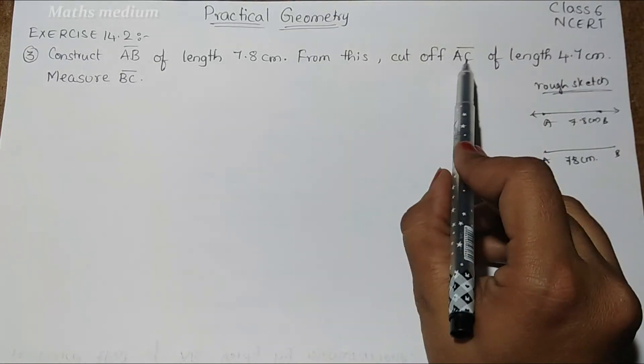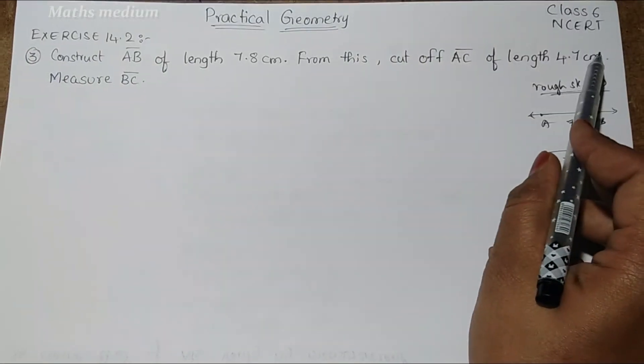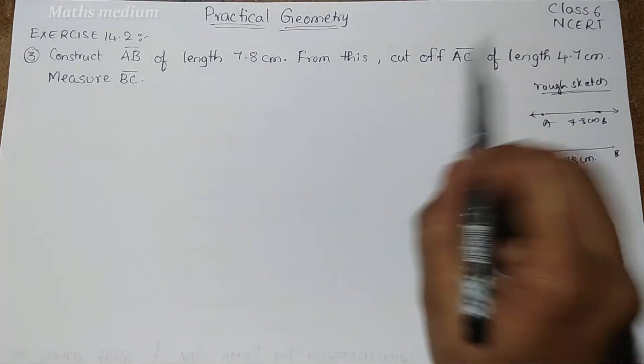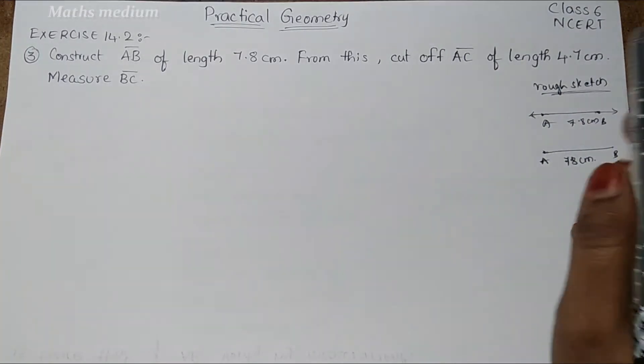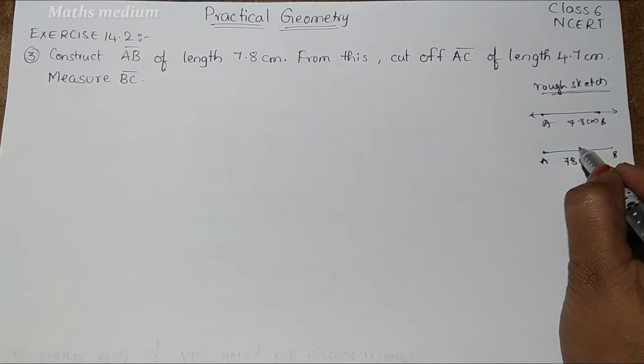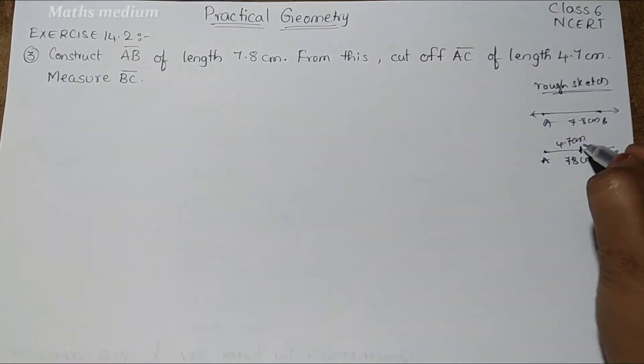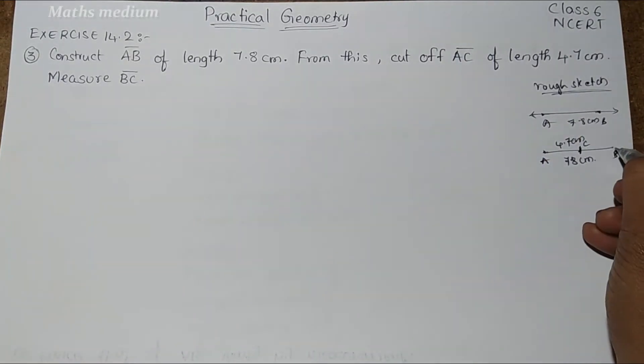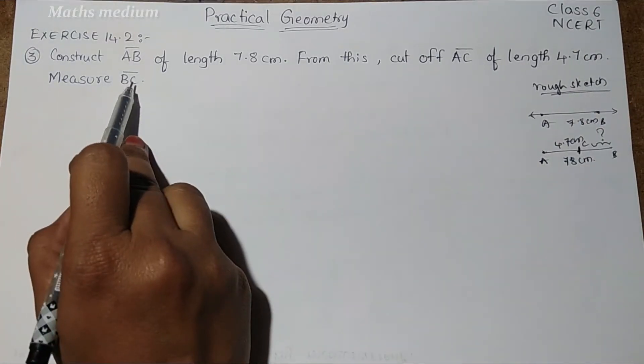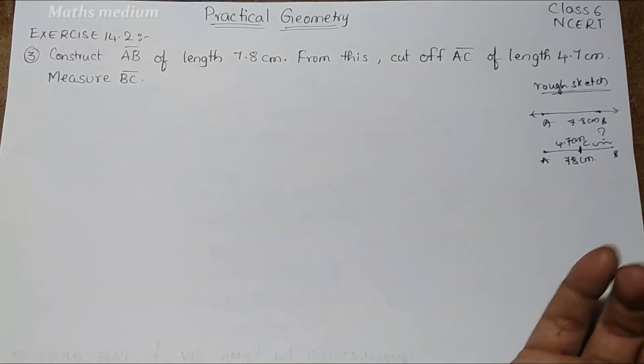From this, cut off AC bar of length 4.7 cm. It means from point A to 4.7 cm, we have to mark a dot. This is C. Now measure BC bar. From B to C, we have to measure how much measuring of BC line segment. That is the problem here.